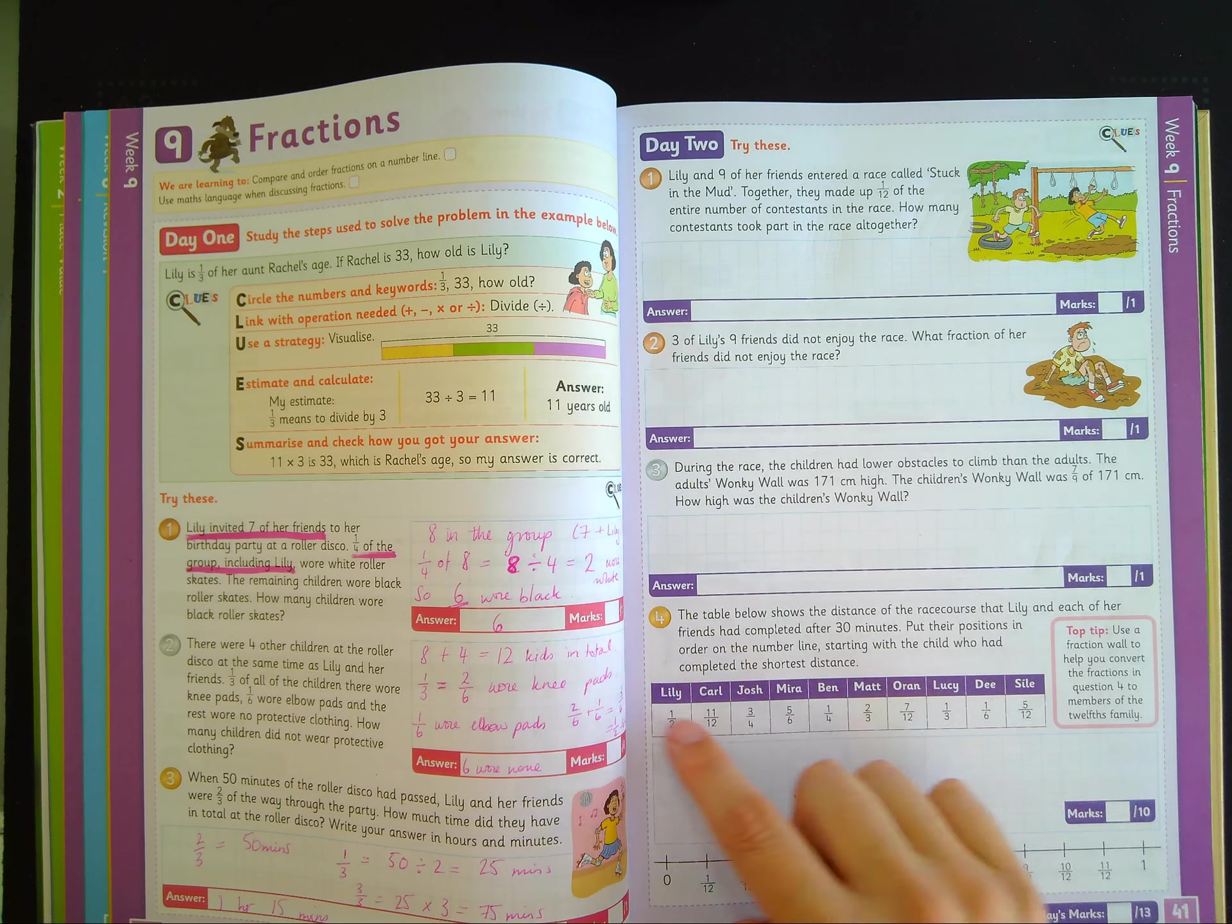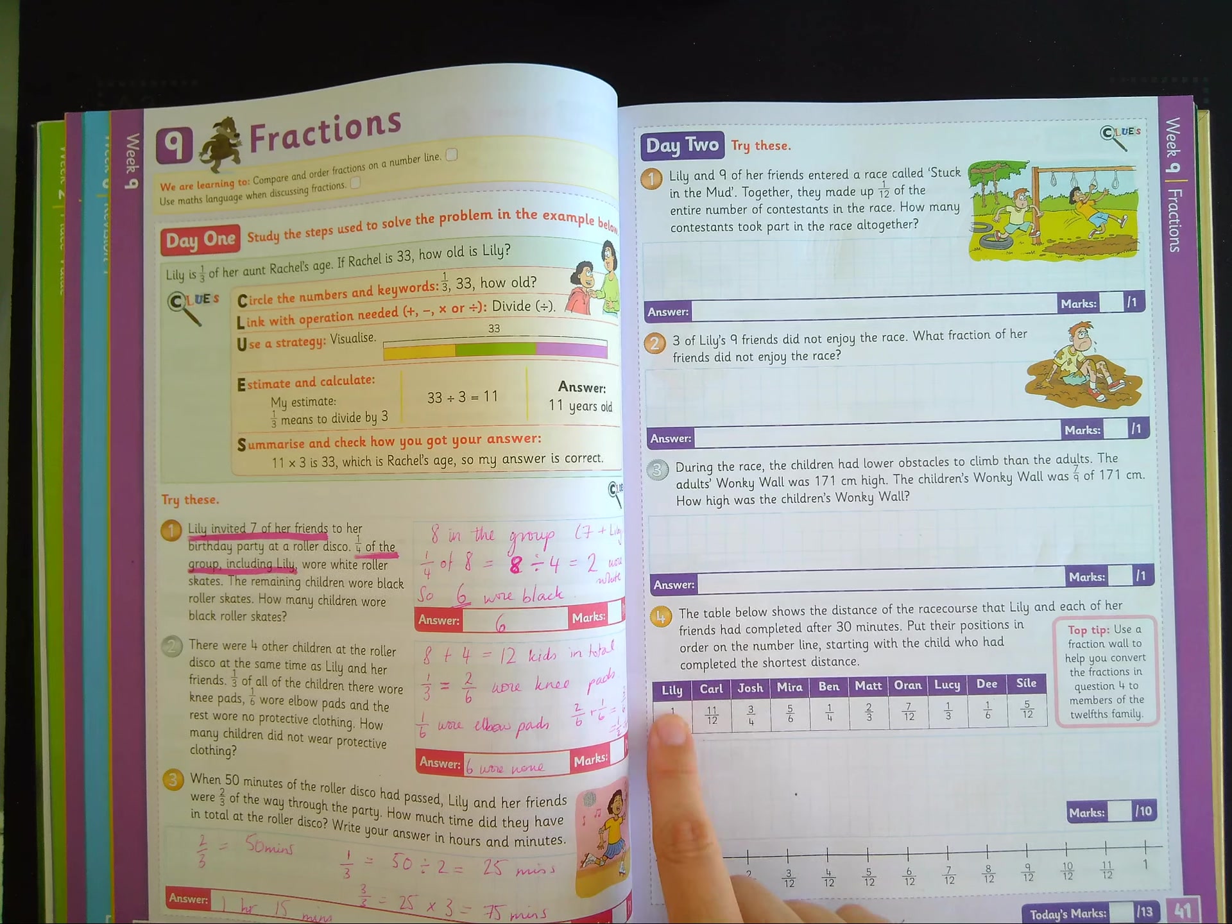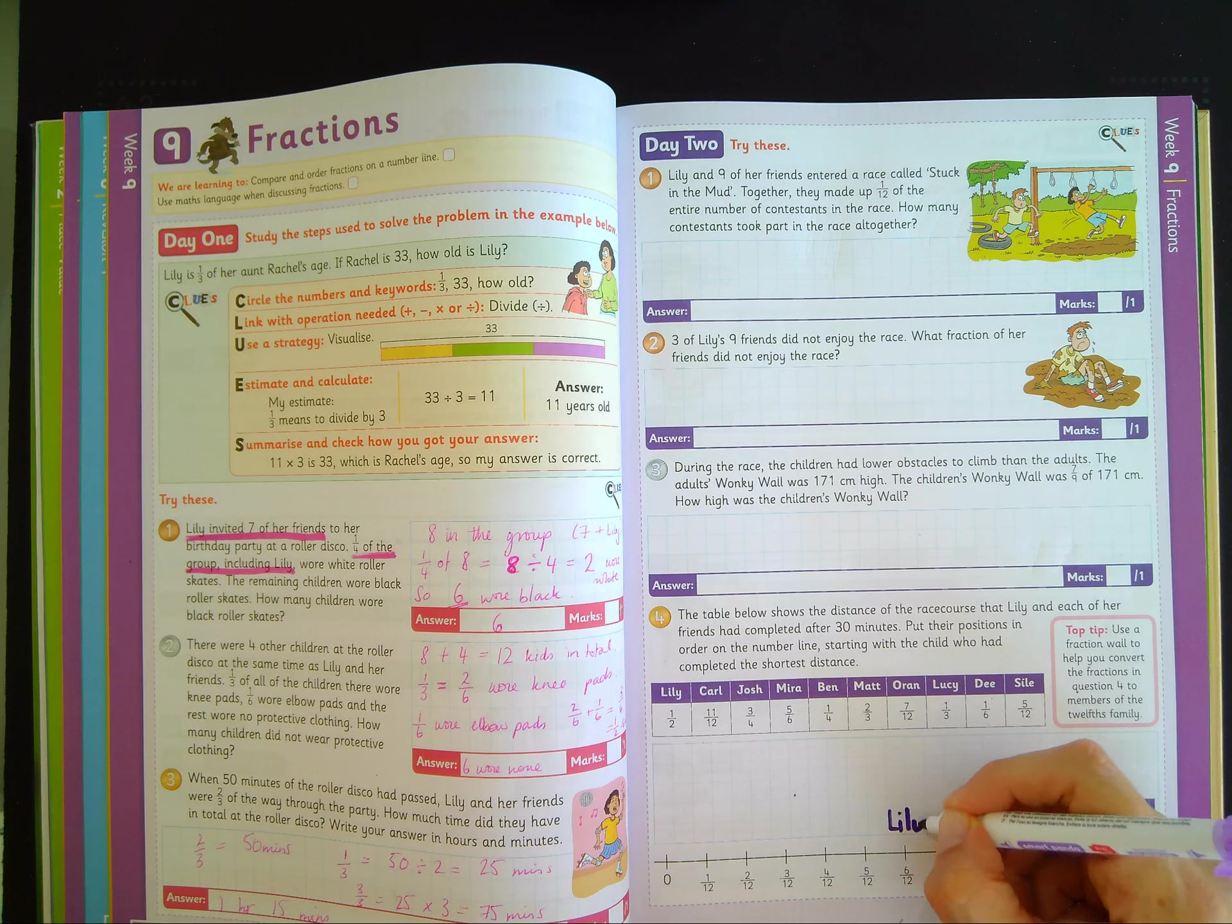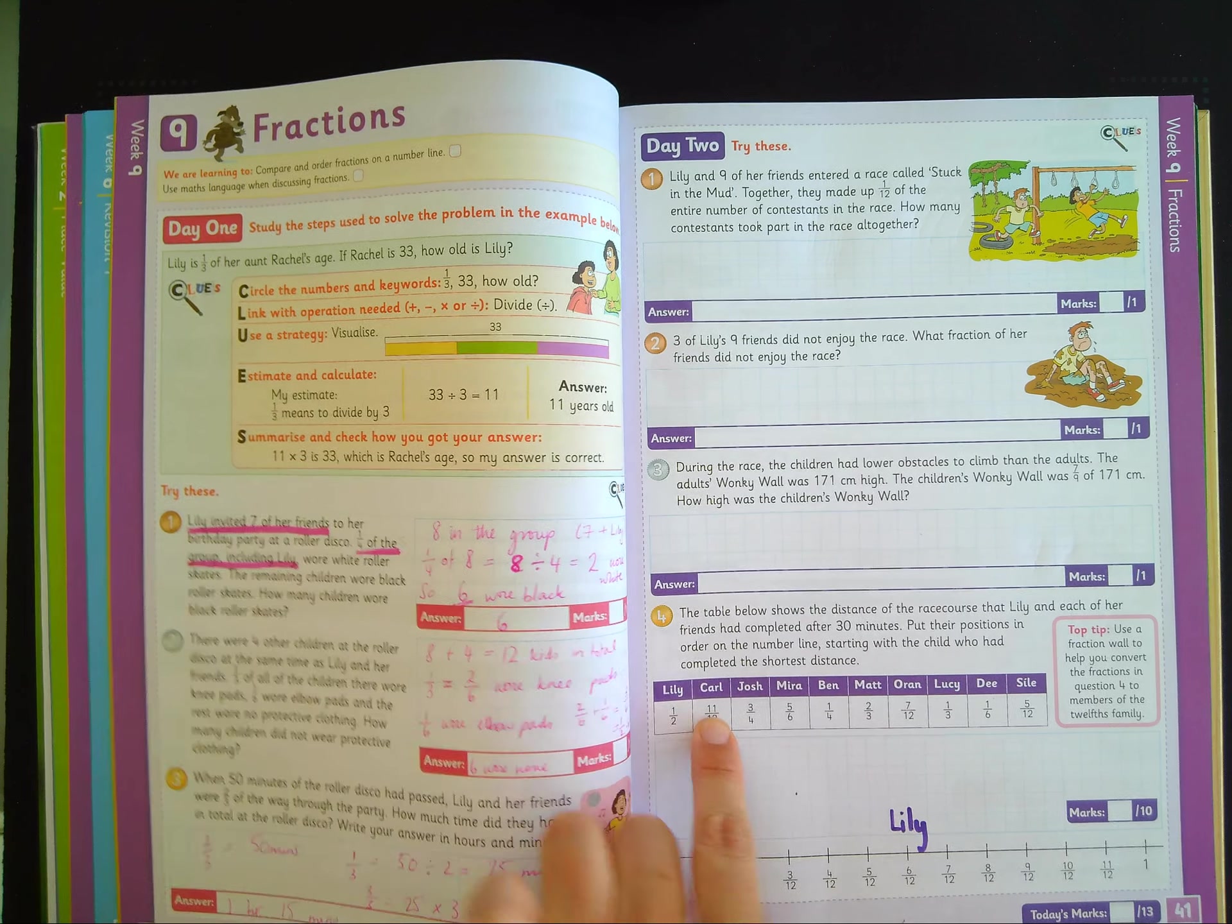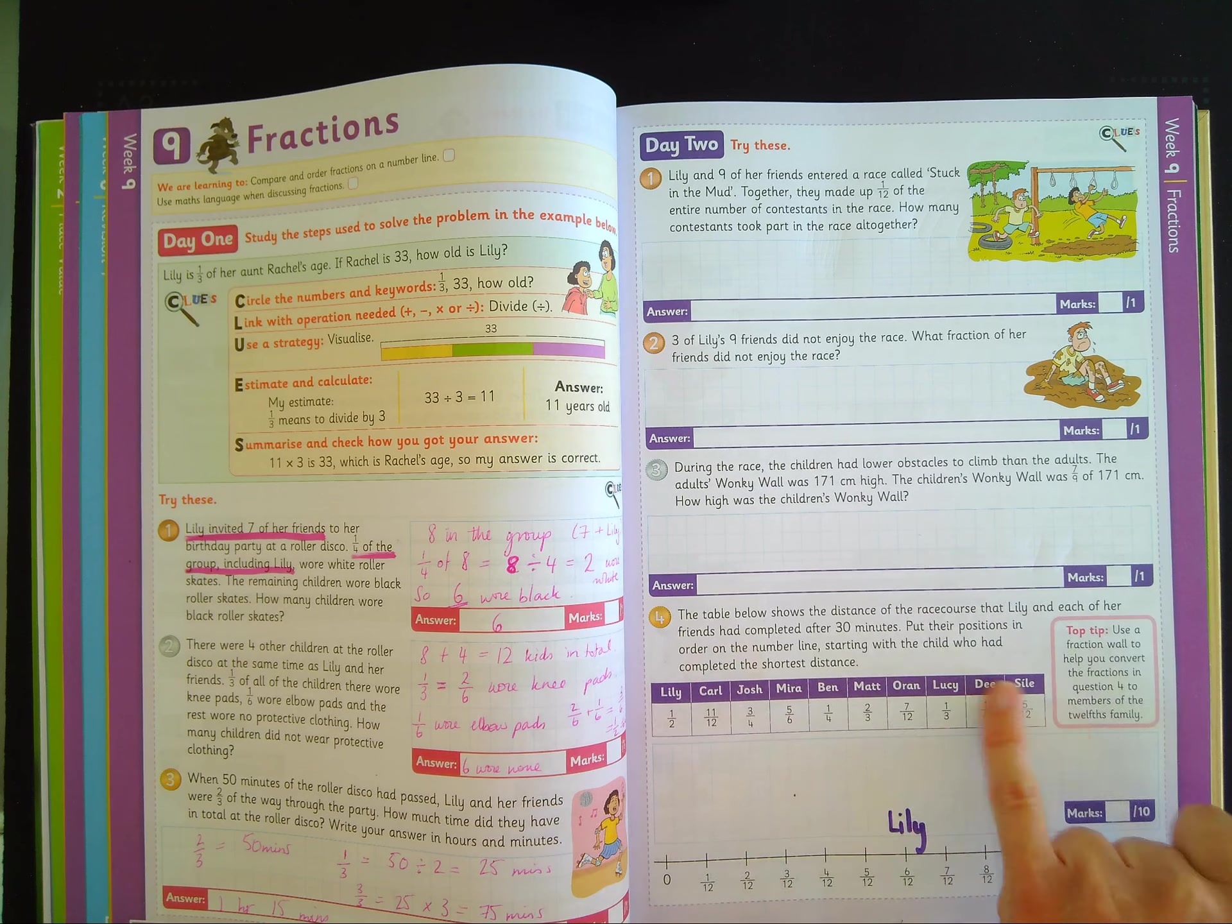Or you can do it in your head. You can say, well, I know that one half would be six twelfths. So you know that Lily would go at six twelfths, and you can just write here, Lily. And you could say, well, eleven twelfths, you can write that straight away, you can write it in. So my advice would be to change all of these to twelfths.